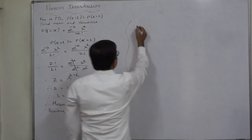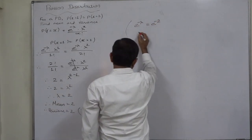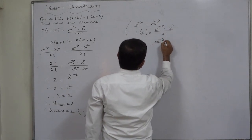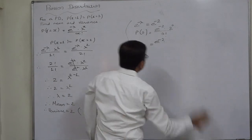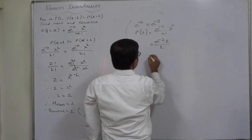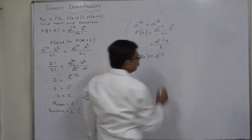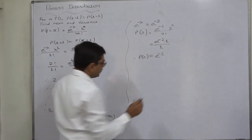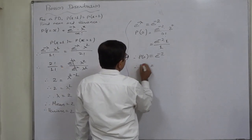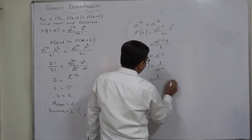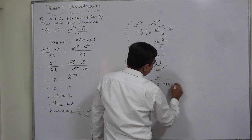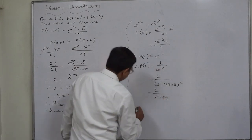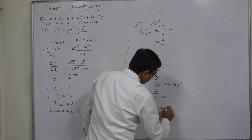Now in this Poisson distribution, e raised to minus mean will be e^(-2). Probability of 0 is e^(-2) * 2^0 / 0!, which equals e^(-2) * 1 * 1 = e^(-2). P(0) equals 1 / (2.71828)^2, that is 1 / 7.389, therefore P(0) equals 0.13534.